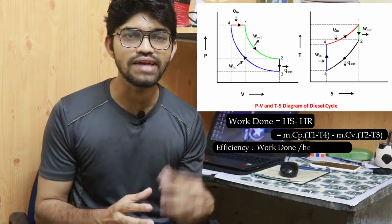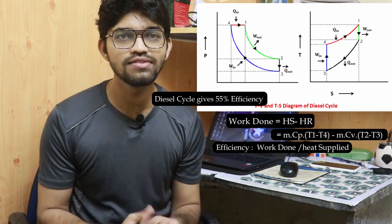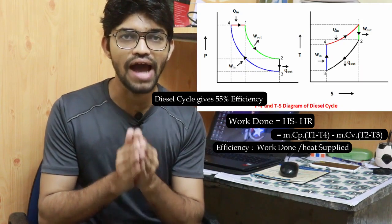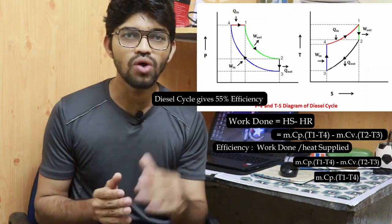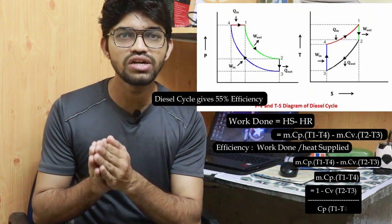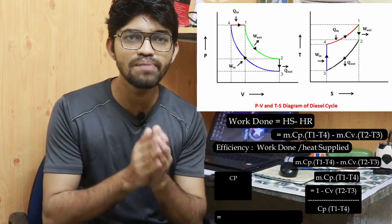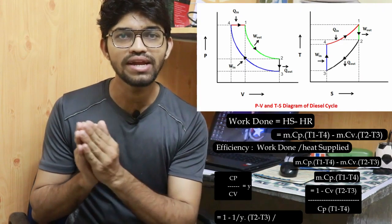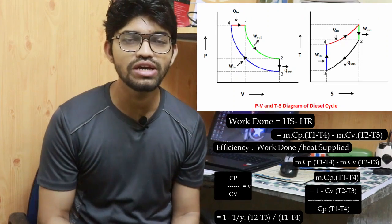The diesel cycle has higher efficiency when the compression ratio is higher, producing around 55% efficiency. Efficiency is calculated as work done divided by heat supplied. Substituting the formulas and cancelling m, the efficiency becomes: η = 1 - [cv·(T2 - T3)] / [cp·(T1 - T4)], which simplifies to η = 1 - (1/γ) · (T2 - T3) / (T1 - T4), where γ = cp/cv.